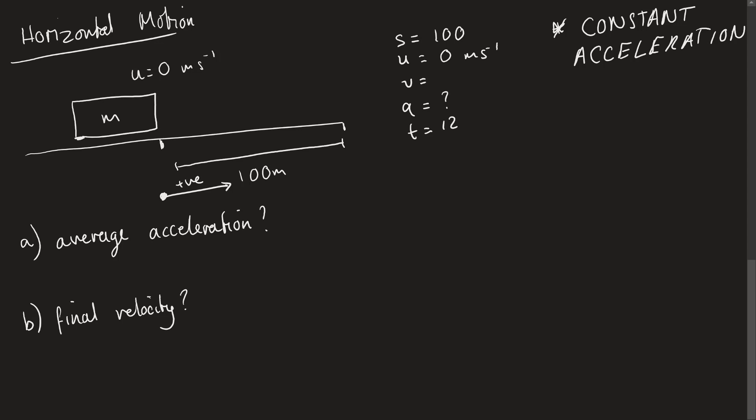The first part is to work out the acceleration. So we're missing V. So SUVAT, we're going to say for part A, S is equal to Ut plus 1 half At squared, the only one without V in it. Then we know U is equal to 0. You'll find this is a common simplification. So if we're trying to solve for A, we can make this into S equals 1 half At squared. Then A is equal to 2S over T squared. And therefore, the acceleration is just 2 times 100 divided by 12 squared, which is just 200 over 144, which is about 1.4 meters per second squared. This is an acceleration.